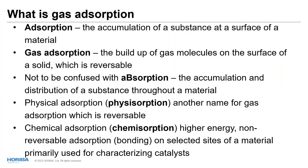So what is gas adsorption? Adsorption is the accumulation of a substance at a surface of a material. Gas adsorption is the buildup of gas molecules on the surface of a solid, which is a reversible process — not to be confused with absorption, which is the accumulation and distribution of a substance throughout a material. Physical adsorption, or physisorption, is another name for gas adsorption and is a reversible process.